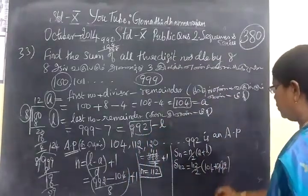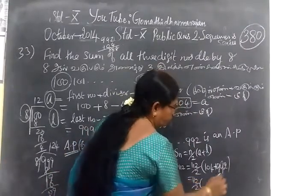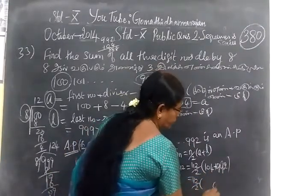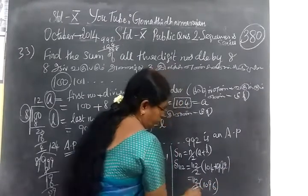So 992 plus 104. Now you cancel, this is 112 by 2, which is 56. If you add, 992 plus 104 is 1096. You can cancel this.